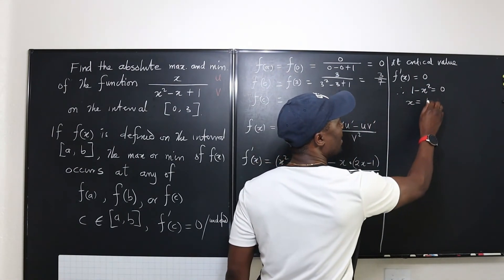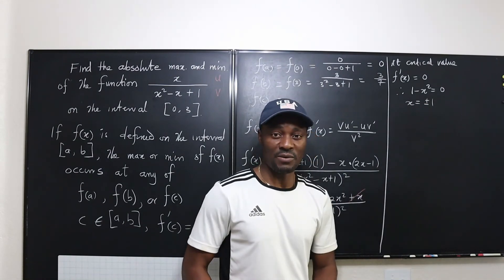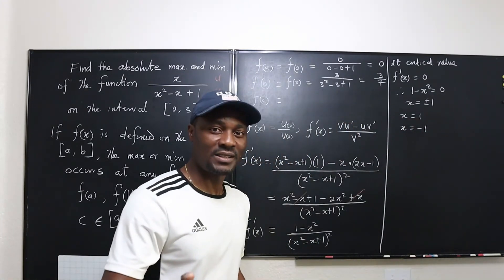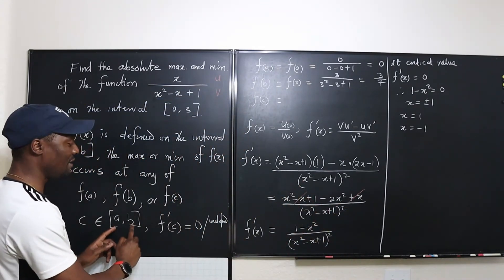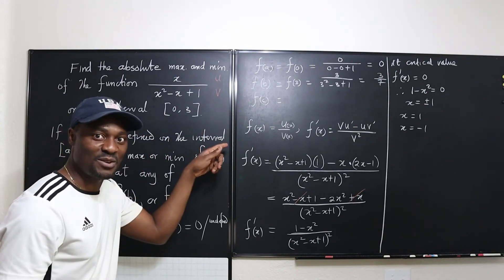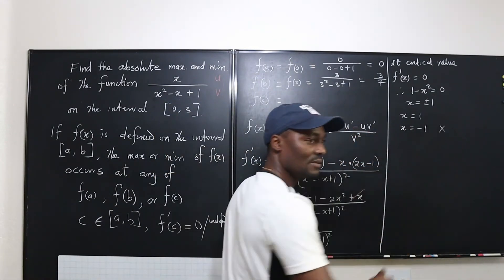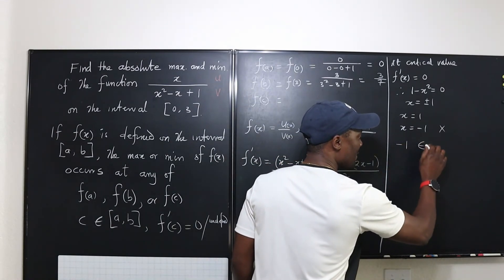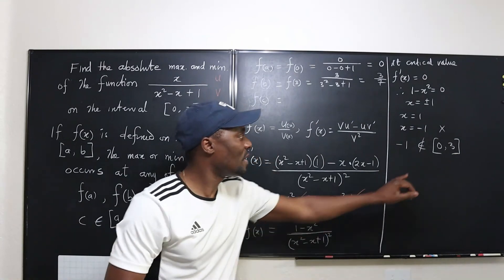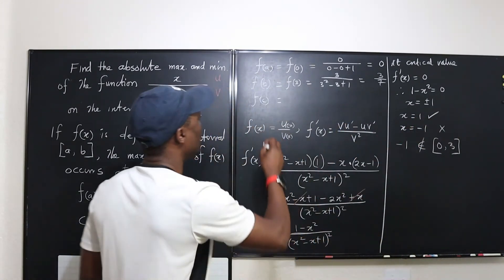Solving 1 minus x² equals 0 gives x equals plus or minus 1. We have two values: x equals 1 and x equals negative 1. But remember, c has to be between a and b — that is, from 0 to 3. Negative 1 is before 0, so it is not in the interval of 0 to 3 and we cannot accept it. The only value we can use is x equals 1.